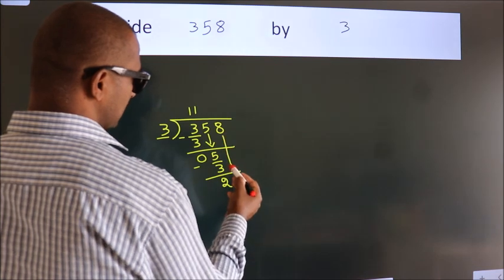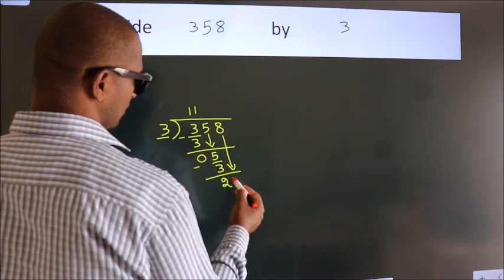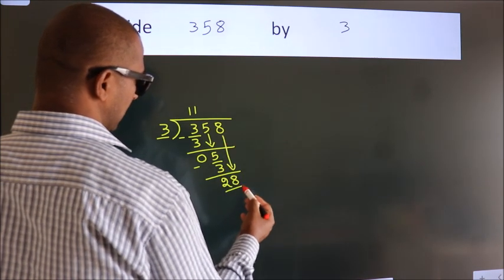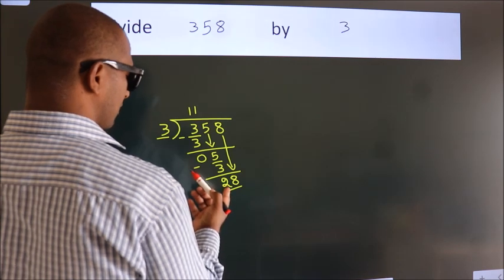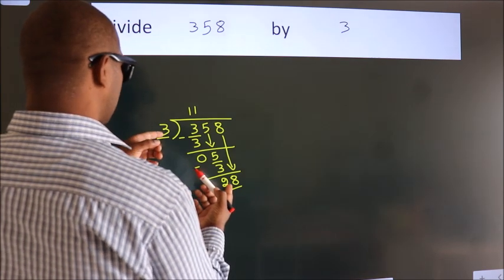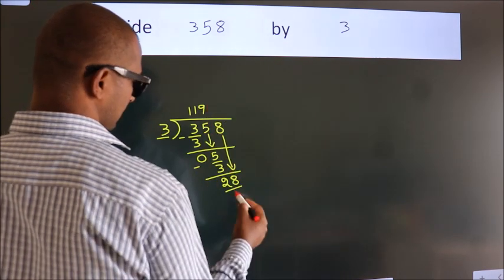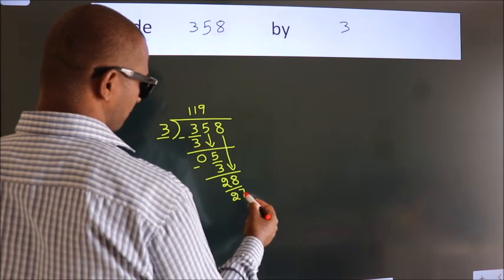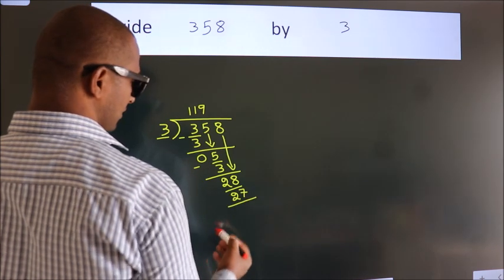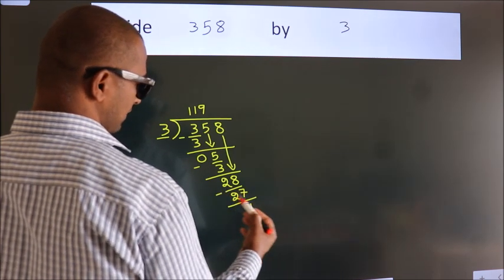After this, bring down the beside number. So 8 down. So 28. A number close to 28 in the 3 table is 3 nines, 27. Now we subtract. We get 1.